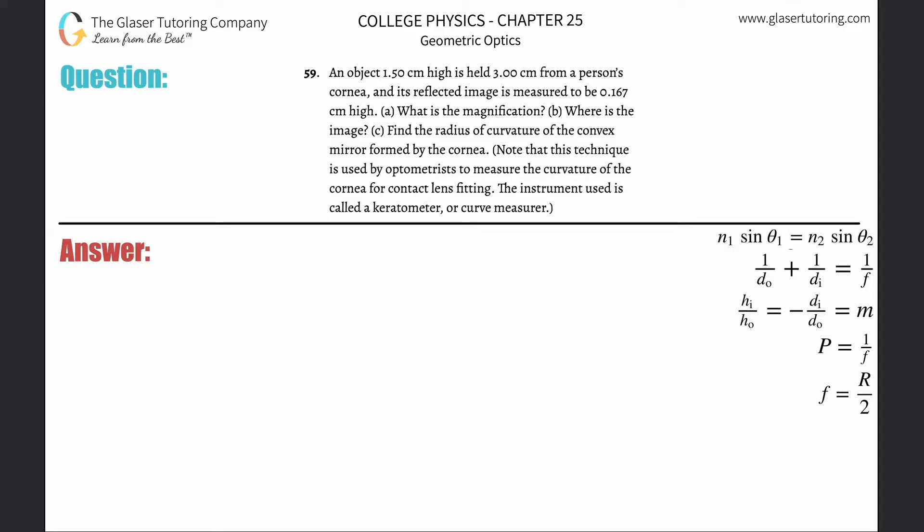Number 59: An object 1.5 centimeters high is held 3 centimeters from a person's cornea, and its reflected image is measured to be 0.167 centimeters high. Letter A asks what is the magnification. We have a formula that says the height of the image divided by the height of the object will be equal to the magnification.